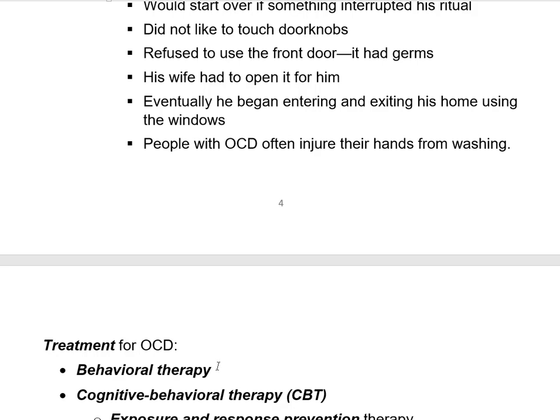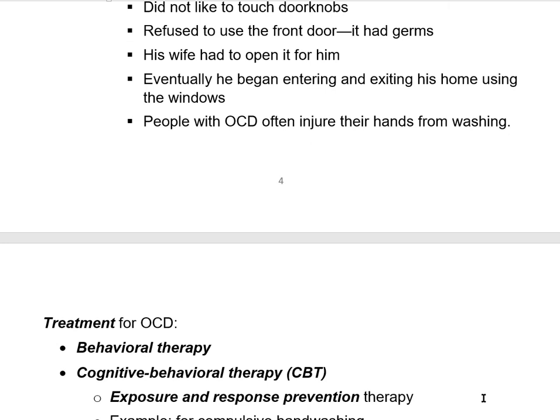The first treatment I'll discuss is cognitive behavioral therapy. Years ago it was just called behavioral therapy, but in recent decades therapists have recognized there's a big cognitive component, and now many therapies fall under the general heading of cognitive behavioral therapy, or CBT. If you're a psych major going into a helping profession, you'll hear that abbreviation a lot. There are different kinds of CBT. The kind typically used to treat OCD is called exposure and response prevention therapy.